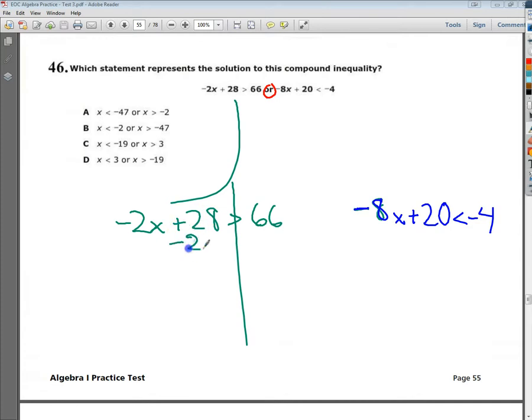So, I'm going to start with plus 28. So, instead of doing addition, I'm going to do a little bit of subtraction here. So, 66 minus 28 gives me 38.